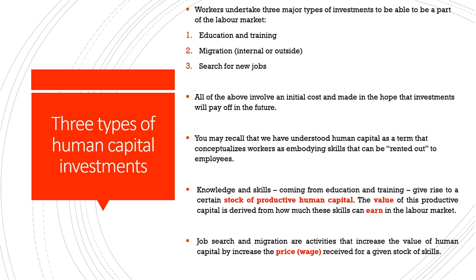There are generally three types of human capital investments a worker makes when choosing to participate in the labour market. First is education and training. Second is migration—whether internal migration within a country or migrating outside one's state or country in search of jobs. Third is the search for new jobs, which also requires having the information needed to carry out that search. These are the three major types of investments made by a worker to be part of the labour market.